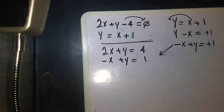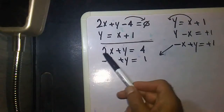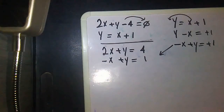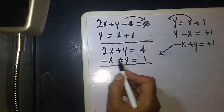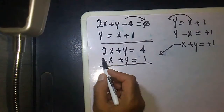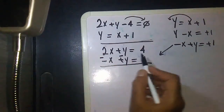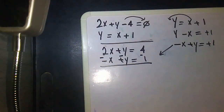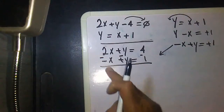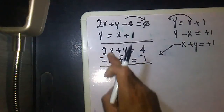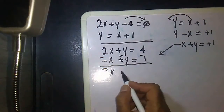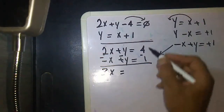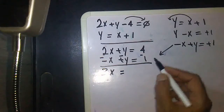Now it's very easy because I have to get rid of the x or the y. What are similar? The y terms are similar — here is one y and here is one y. So I will get rid of the y. When I subtract: 2x minus minus x means 2x plus x, which gives 3x. The y terms cancel each other. Then 4 minus 1 equals 3.